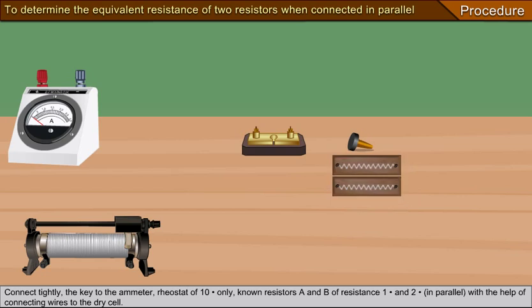Known resistors A and B of resistance 1 ohm and 2 ohm in parallel with the help of connecting wires to the dry cell.